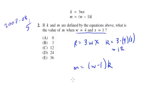So now we have a value for k, it's 12. So we know that m is going to equal 4 minus 1 times 12, which is 3 times 12, which is 36. And this is going to be choice E.